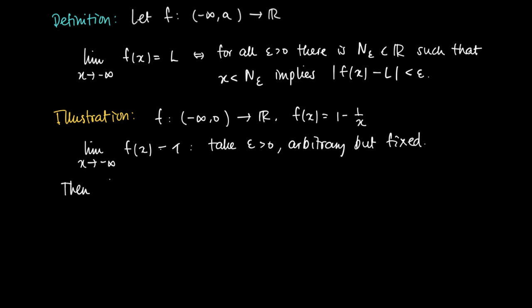Then we'll look at the difference of f(x) and the supposed limit 1. The absolute value of the difference equals the absolute value of -1/x. So this is the absolute value of 1/x, and this is smaller than ε if only x is chosen small enough, specifically x < -1/ε.